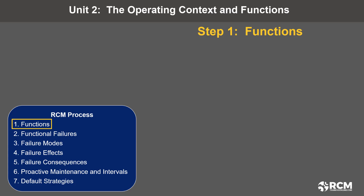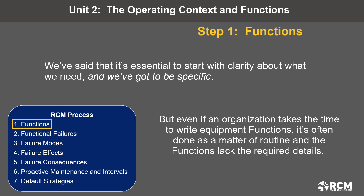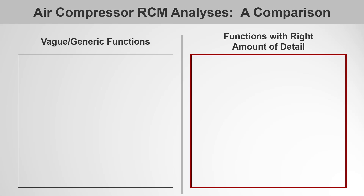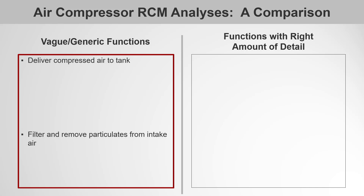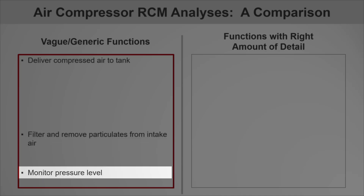It's essential to start with clarity about what we need, and we've got to be specific. But even if an organization takes the time to write equipment functions, it's often done as a matter of routine and the functions lack the required details. Let's look at some real-world examples from an air compressor analysis that I facilitated. On the left side: deliver compressed air to tank; filter and remove particulates from intake air; monitor pressure level. These describe just about every air compressor, every intake air filter, and every pressure indicator — they're generic.